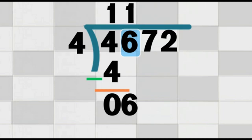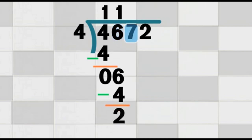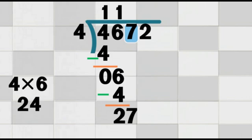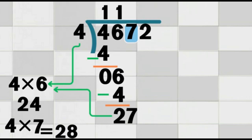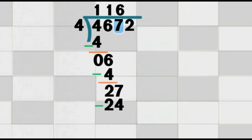Multiply and subtract again. 1 times 4 equals 4. Then subtract: 6 minus 4 equals 2. We write the 2 under the 6. Now, we bring down the next digit from the dividend, which is 7. We place the 7 next to the 2, and now we have the number 27. We ask: how many times does 4 go into 27? 4 times 6 equals 24 — close. 4 times 7 equals 28 — too big! So, 4 goes into 27 six times. We write 6 above the 7. Now our answer on top is 116. Multiply: 6 times 4 equals 24. Subtract: 27 minus 24 equals 3. Write the 3 under the 27.